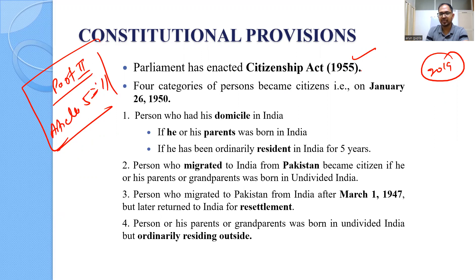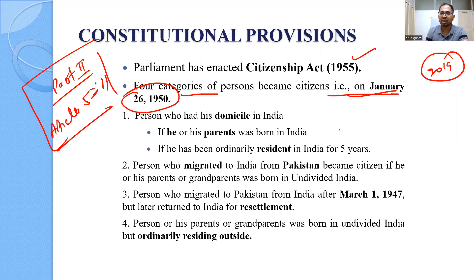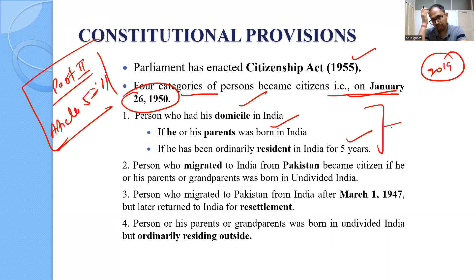Before the Citizenship Act 1955, at the time of adoption of our constitution on January 26, 1950, there were four categories of people called citizens of India. First, a person who had their domicile in India and either they or one of their parents was born in India, or they had been an ordinary resident in India for five years. Second, a person who migrated to India from Pakistan became a citizen if they, their parents, or grandparents were born in undivided India.